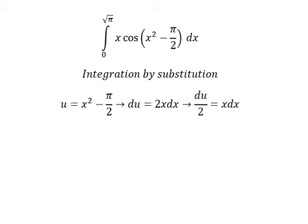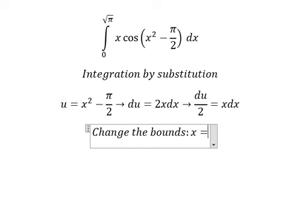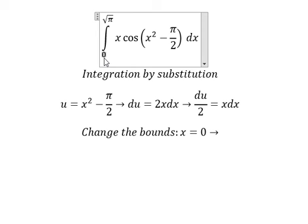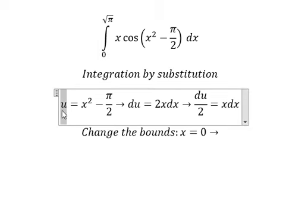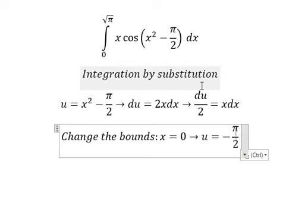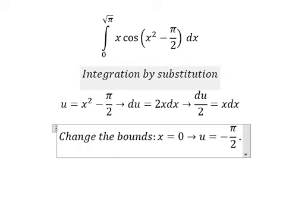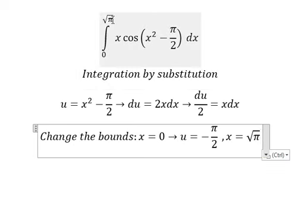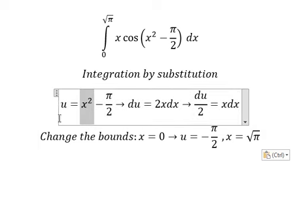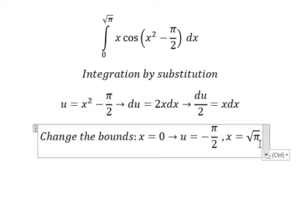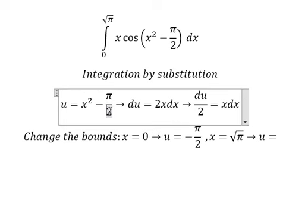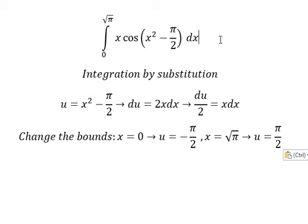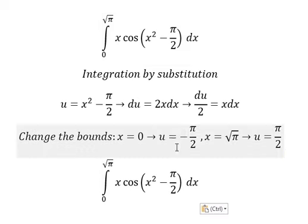Next we need to change the bounds. When x equals to zero, I will put zero here so you got u equals to negative π over 2. When x equals to the square root of π, I will put this one here and we can find the value of u that is about π over 2.